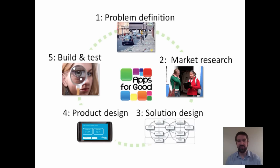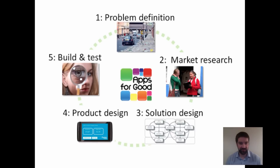Once they've done this, there's a lot of brainstorming that goes on to develop some kind of solution design in terms of how the app might work in theory. Then of course you have to factor in the technicalities of developing an app — sometimes we want things that just aren't technically possible. So we combine the solution design with the product design before we go on to build and test. Once we've built and tested, we'll probably create another problem and the whole process starts again. These five simple steps can be really useful to get your students into the right mindset.